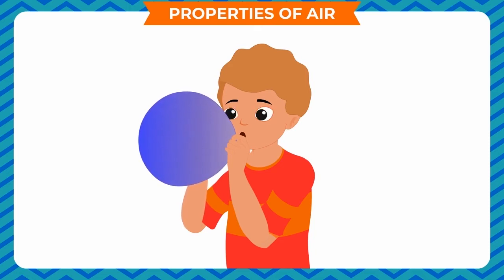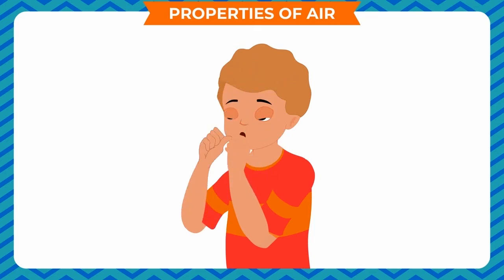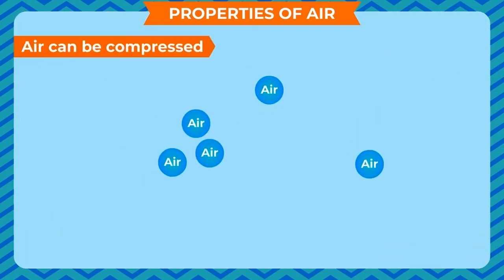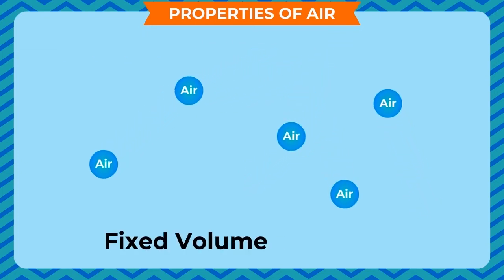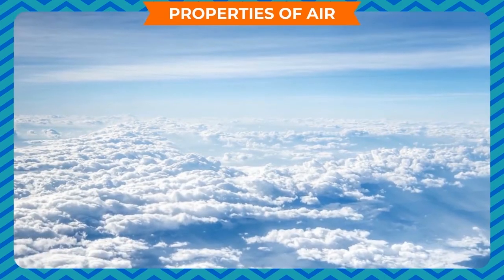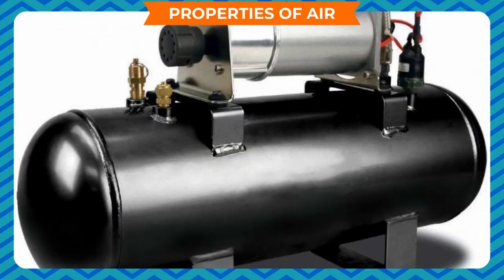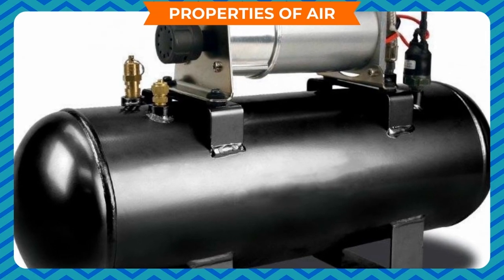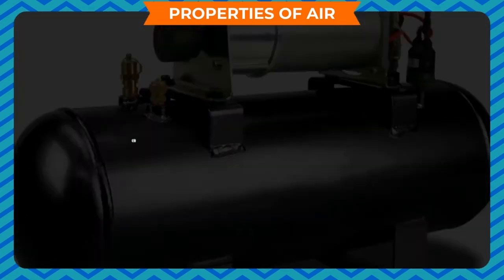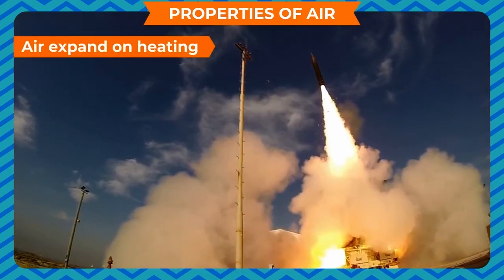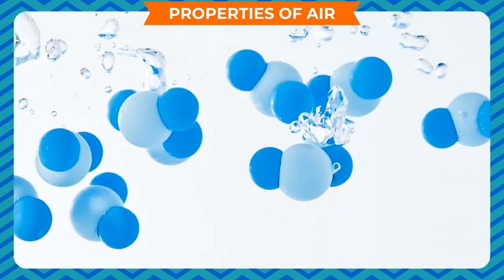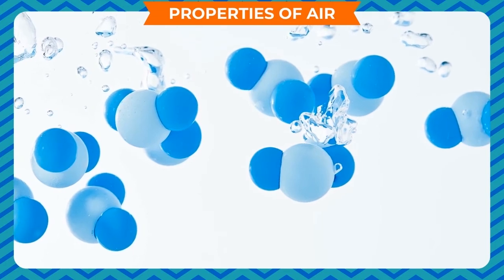Air can be compressed: the molecules of air are free to move — they do not have fixed volume and shape. Air can be compressed; that is, the pressure of air can be increased by pressing it into a container. You see LPG cylinders, car tires, inflated balloons, etc. — in all these, compressed air is stored.